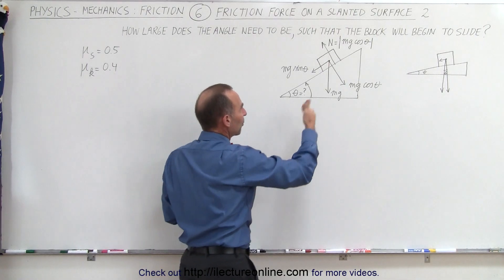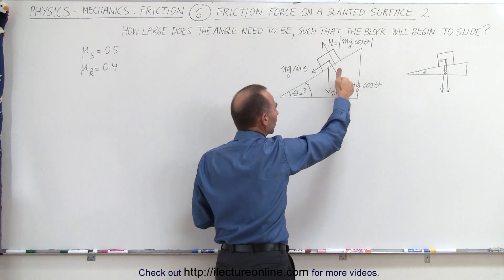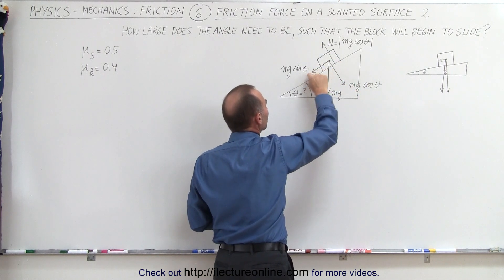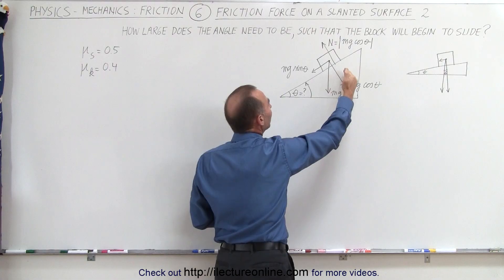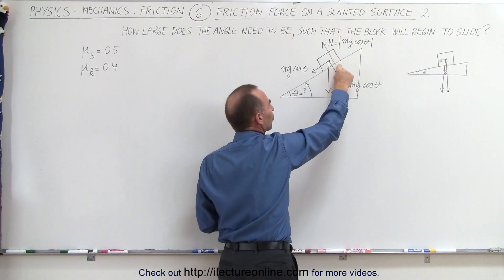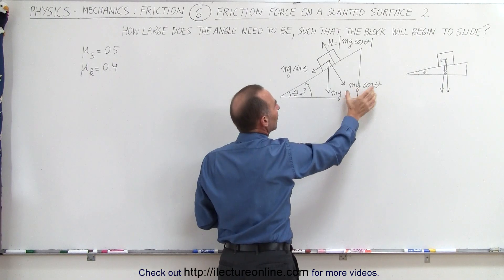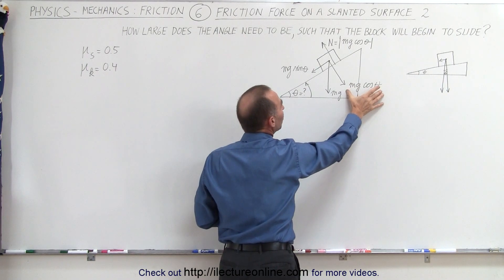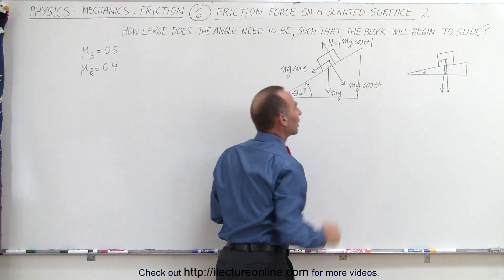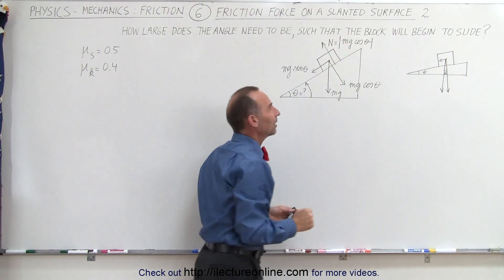Now, notice that we've already drawn some of the vectors. We have the weight of the object. We have the perpendicular component, mg cosine theta, the parallel component, mg sine theta, and the normal force, which is the reactionary force of the surface against the block here, which is equal in magnitude, opposite direction to the weight component perpendicular to the surface. The normal force, then, is mg cosine of theta.